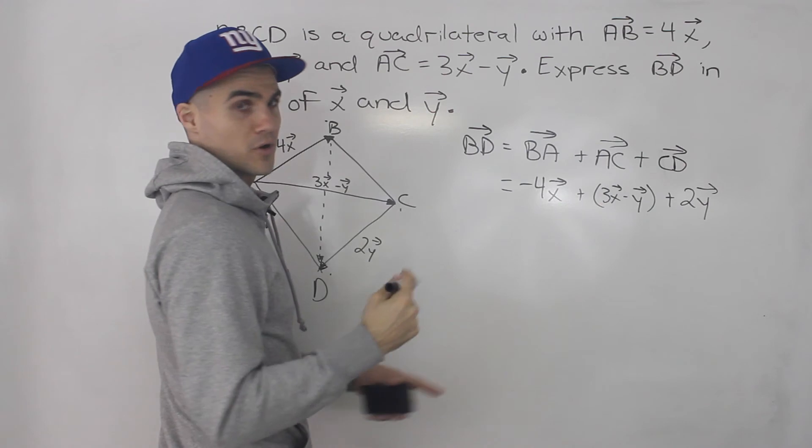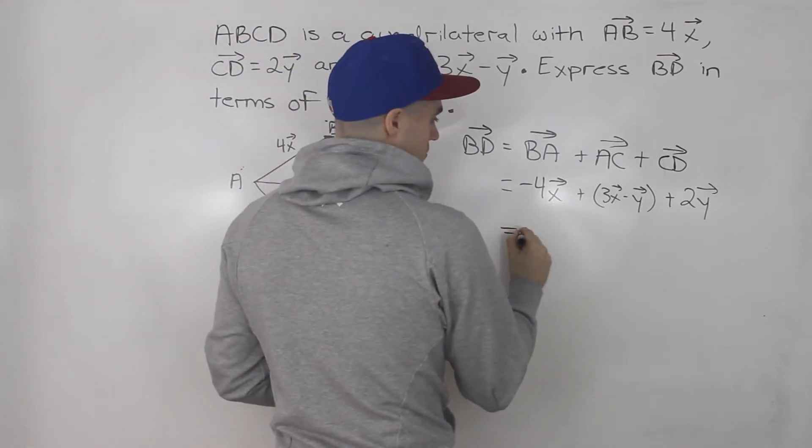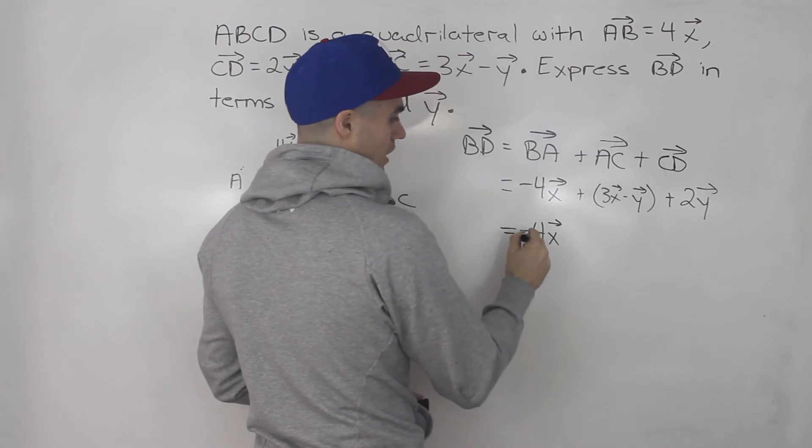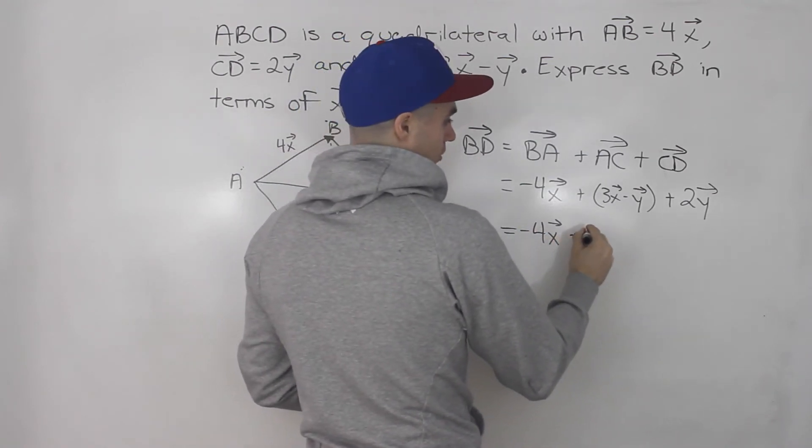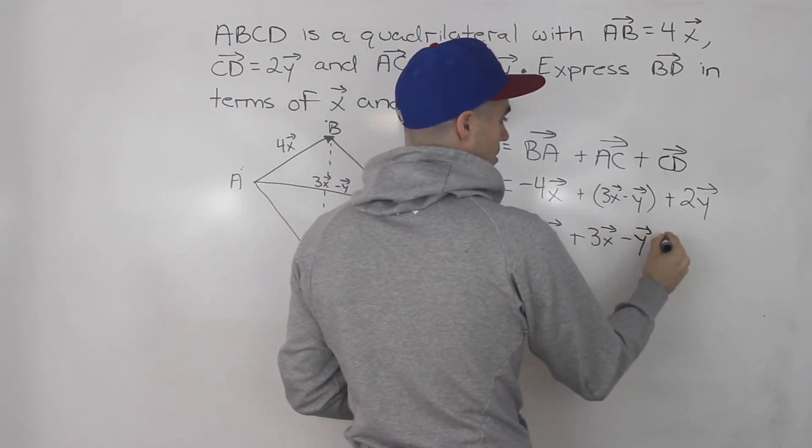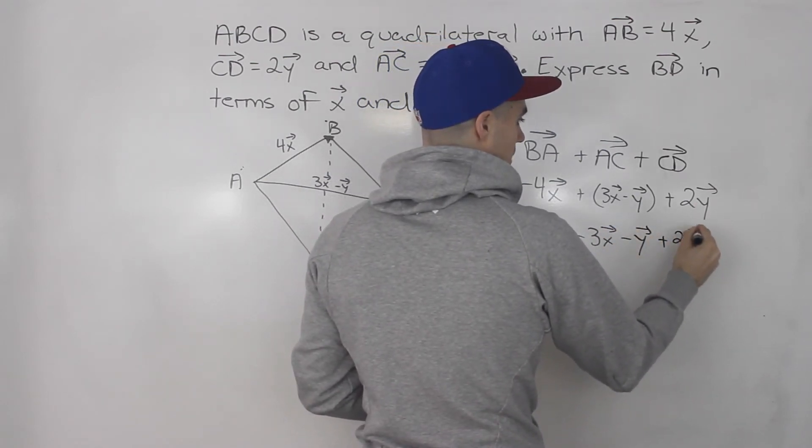And now notice at this point it's like collecting like terms. So we got negative 4 times vector X plus 3 times vector X minus vector Y plus 2 times vector Y.